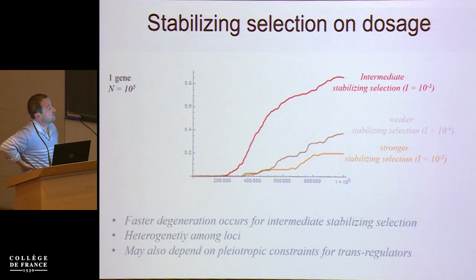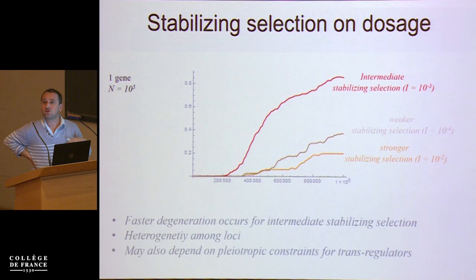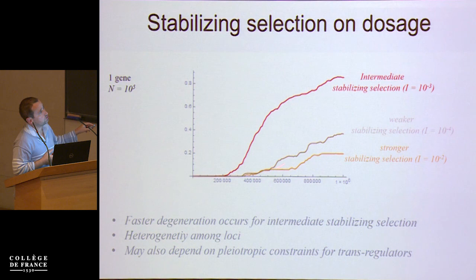Another effect you can look at is the intensity of stabilizing selection on dosage. It turns out that the rate of degeneration is maximal at intermediate levels of stabilizing selection. When stabilizing selection on dosage is weaker or stronger, the rate is lower.